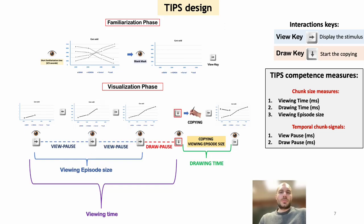Applying TIPS, we are able to record several measures of the contents, such as the participant chunk size through the viewing time, the viewing episode size, and the drawing time. We are also able to record temporal chunk signals represented through the view pause, which is the pause between successive view key presses, and the draw pause, which is the latency before pressing the draw key.